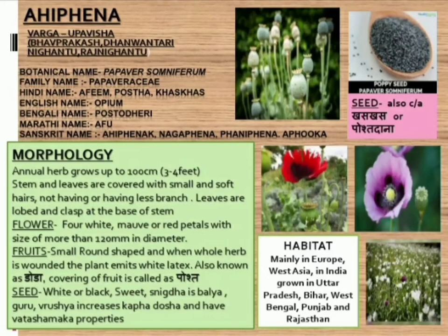Now let's go to morphology. This is an annual herb with a height of 100 cm, approximately 3–4 feet. Stem and leaves are covered with small and soft hairs, with no or few branches. Leaves are lobed and clasped at the base of the stem. The flowers have 4 petals — white, mauve, and red — with a size of more than 120 mm in diameter. Different colors can be seen as in the images: white, mauve (violet/purple), and red (rakt varna).